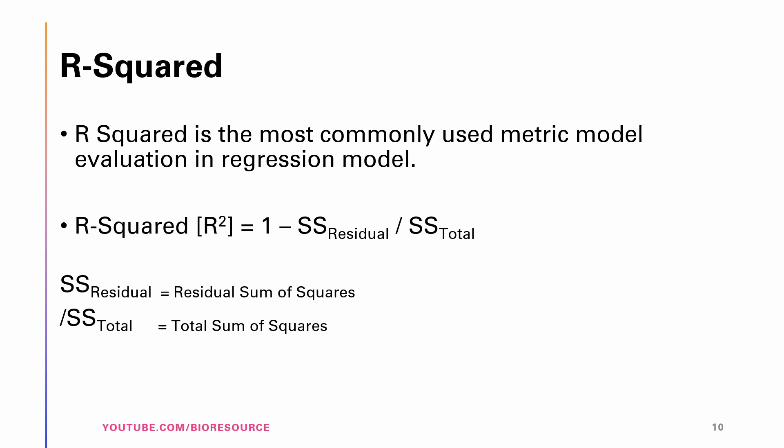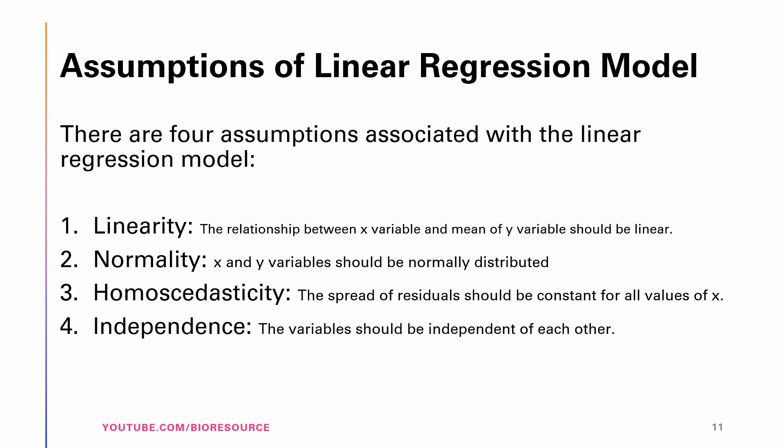The other metric is mean squared error (MSE), which is the mean of the squared difference between actual versus predicted values. Another method is root mean squared error (RMSE), which is the square root of the mean squared error — the root of the mean differences between actual and predicted values.